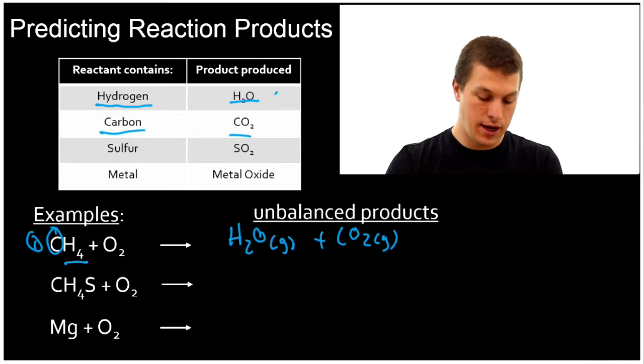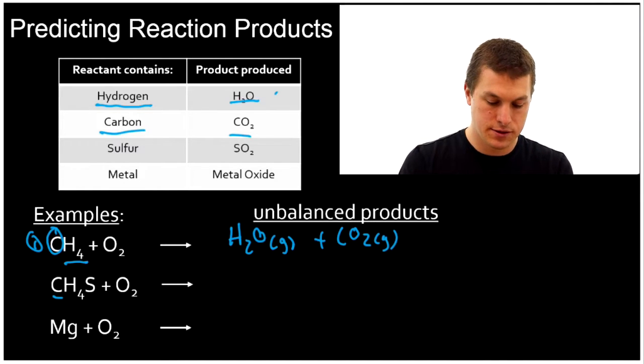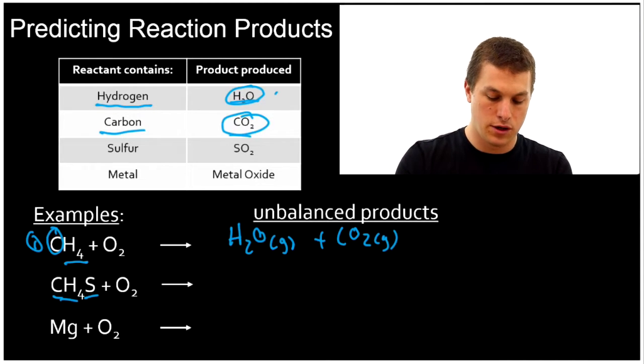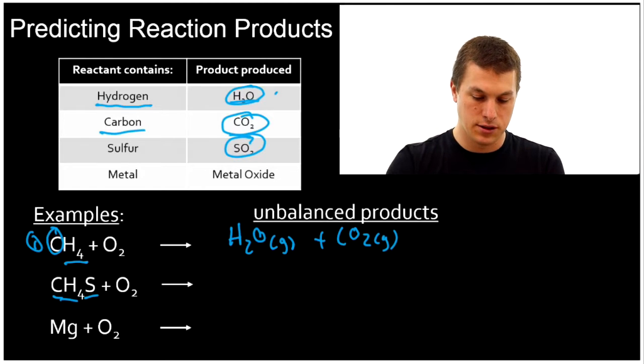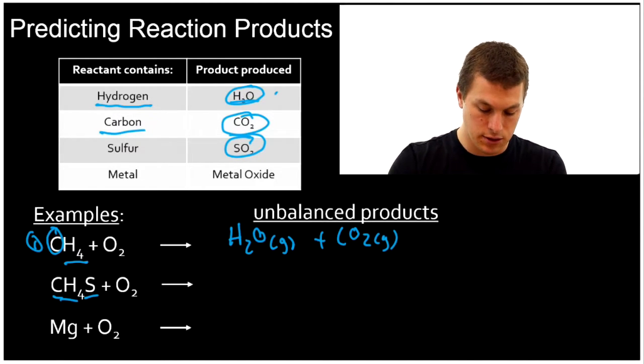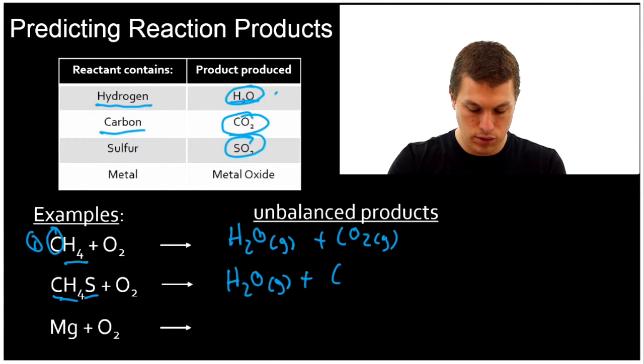So CH4S, right? Here we got carbon, that gives us CO2. We got hydrogen, that gives us, once again, H2O. But we also have sulfur, so we're also going to get out SO2. So we have three products in this reaction because there's three separate elements we're combining with molecular oxygen. We get out H2O gas, plus CO2 gas, plus SO2 gas.